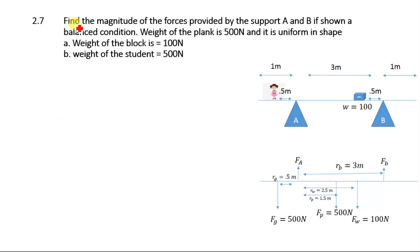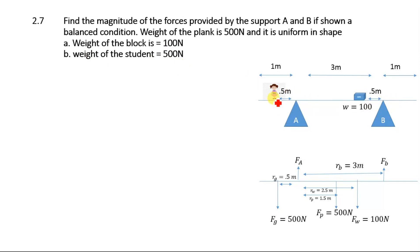The statement of the numerical is: find the magnitude of the forces provided by the supports A and B in a balanced condition. The weight of the plank is 500 N and it is uniform in shape. The weight of the block is 100 N and the weight of the student is 500 N. This is support A, this is support B, this is the plank, this is the block, and this is the girl. The weight of the student is 500 N.